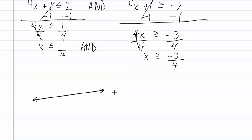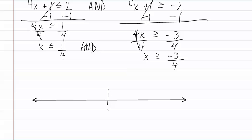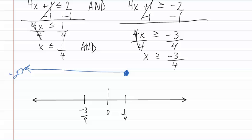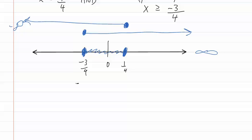Now we need to graph. We put zero, one-fourth, and negative three-fourths on our graph. First, we draw the less than or equal to one-fourth, which means we have a filled-in dot going towards negative infinity. Then we do greater than or equal to negative three-fourths, which is a filled-in dot going towards positive infinity. We now choose the overlapping section, which is from negative three-fourths to positive one-fourth and all the area in between. Now we can write our interval notation, which is bracket for the closed dot, negative three-fourths comma one-fourth bracket. This is our answer.